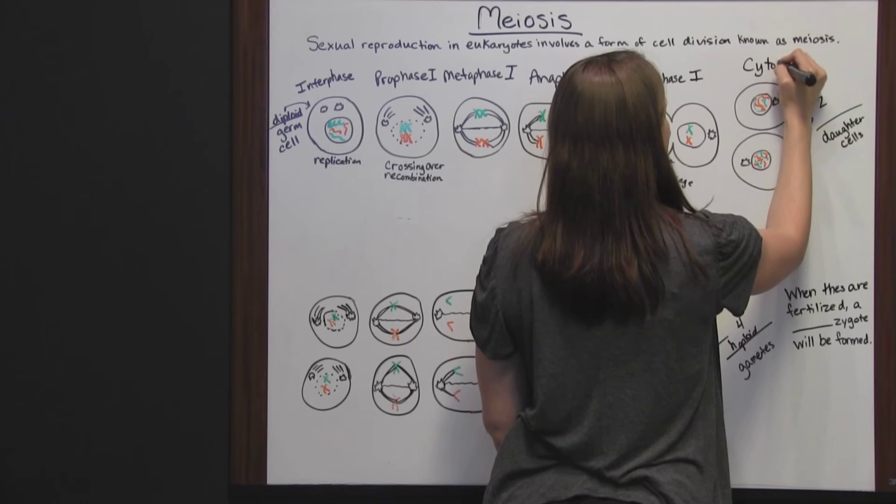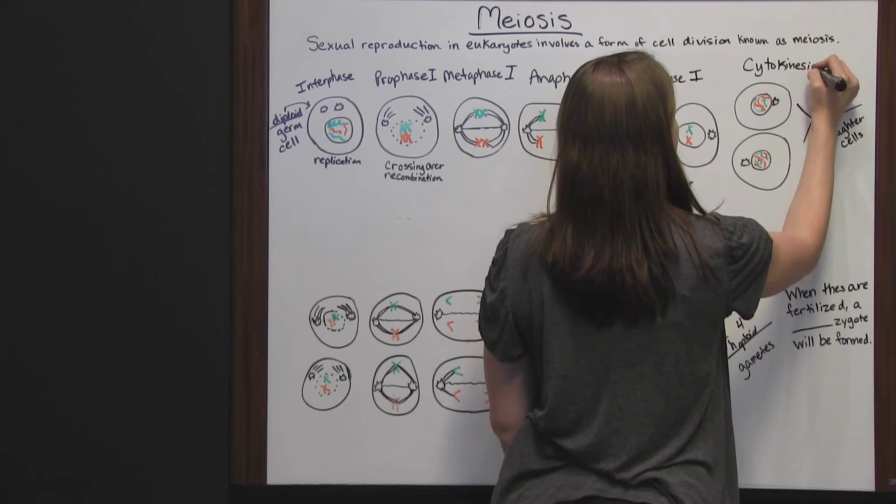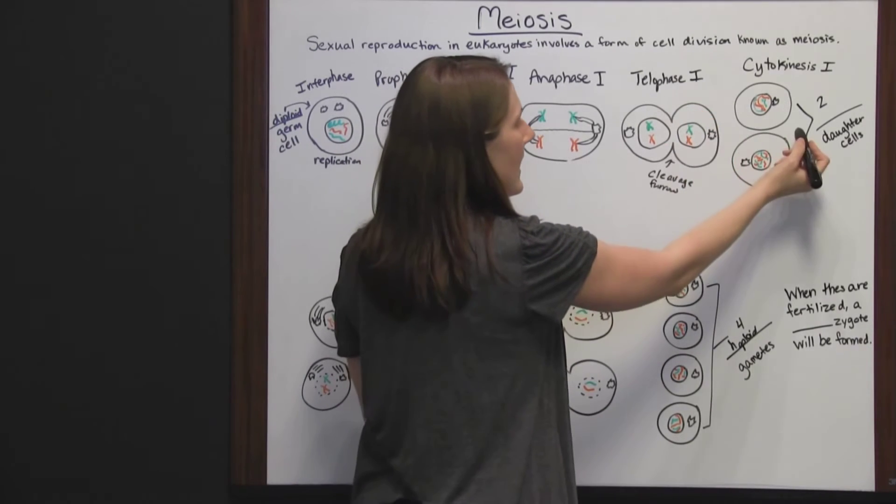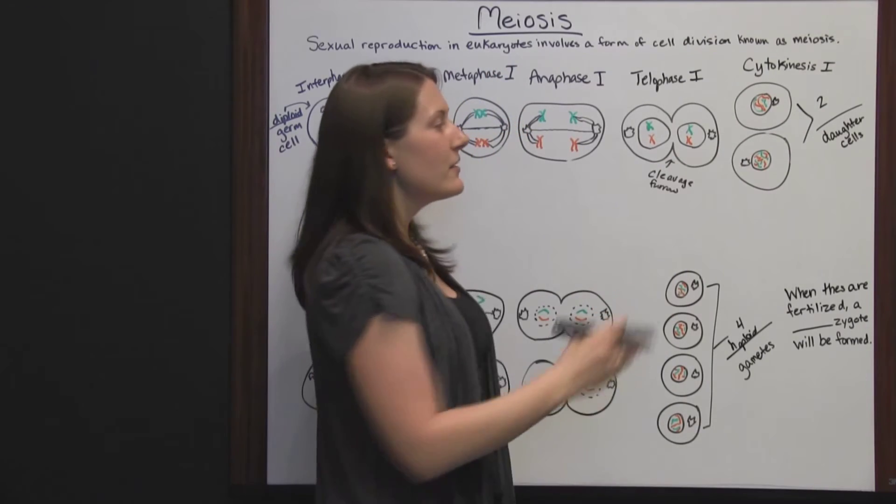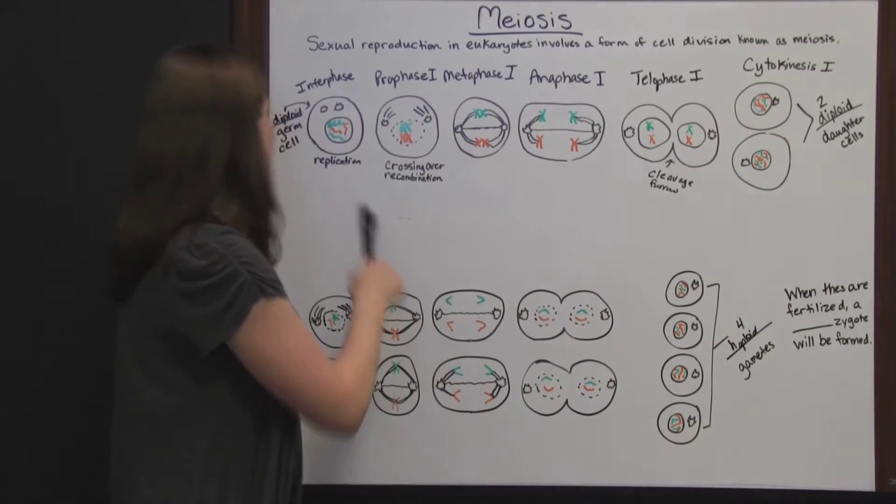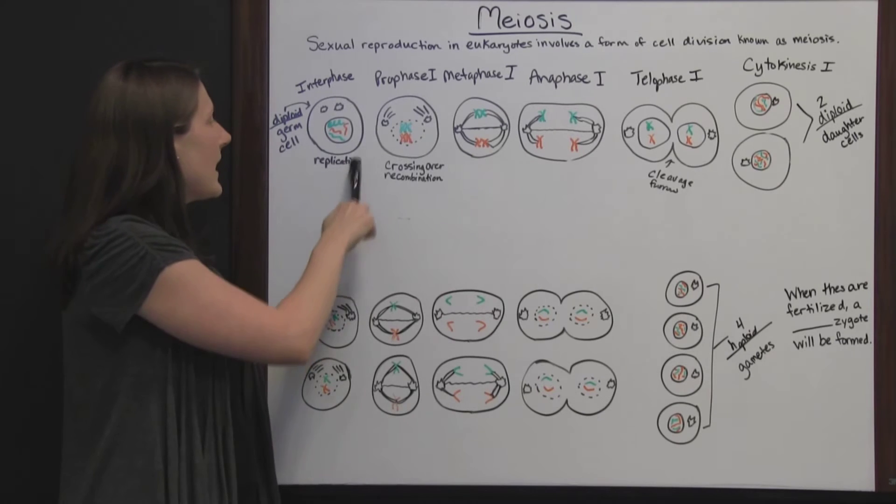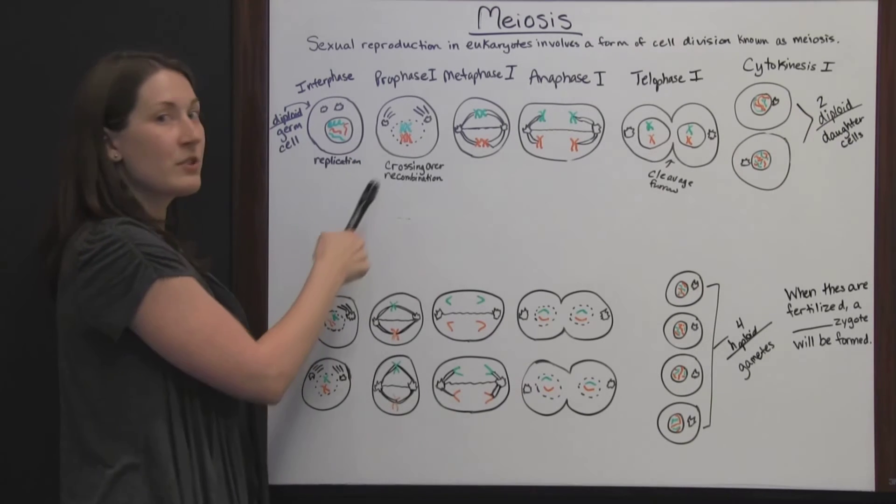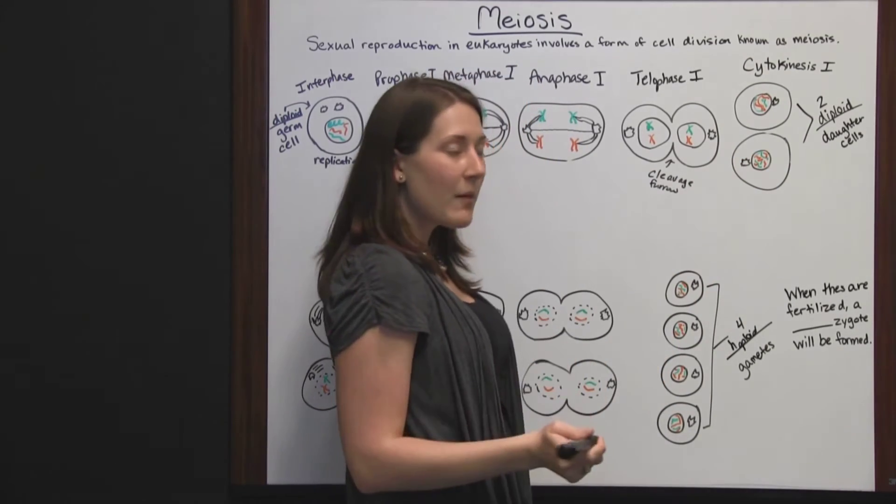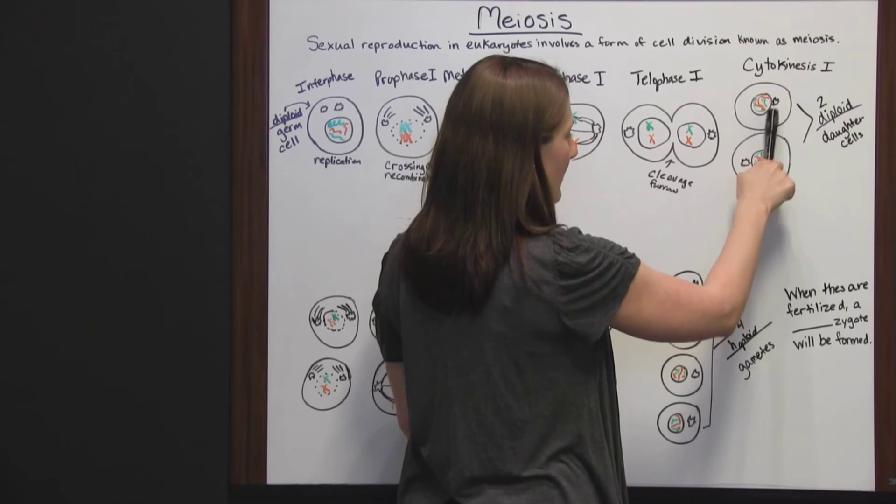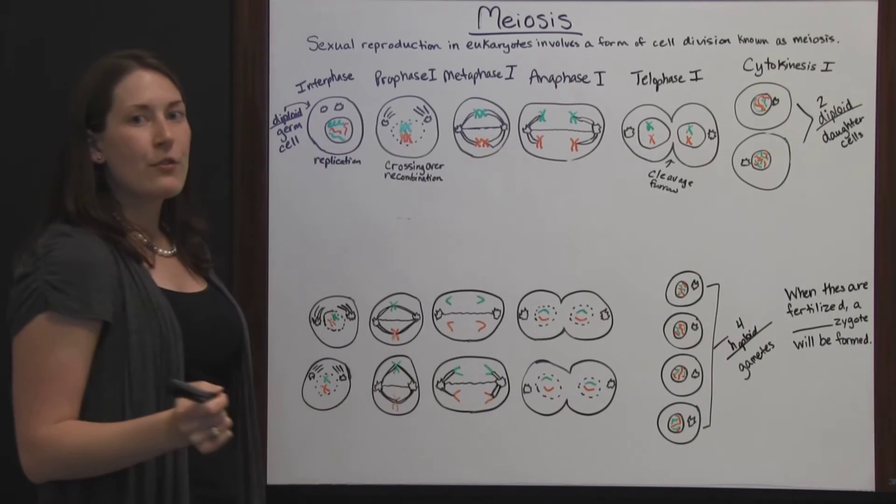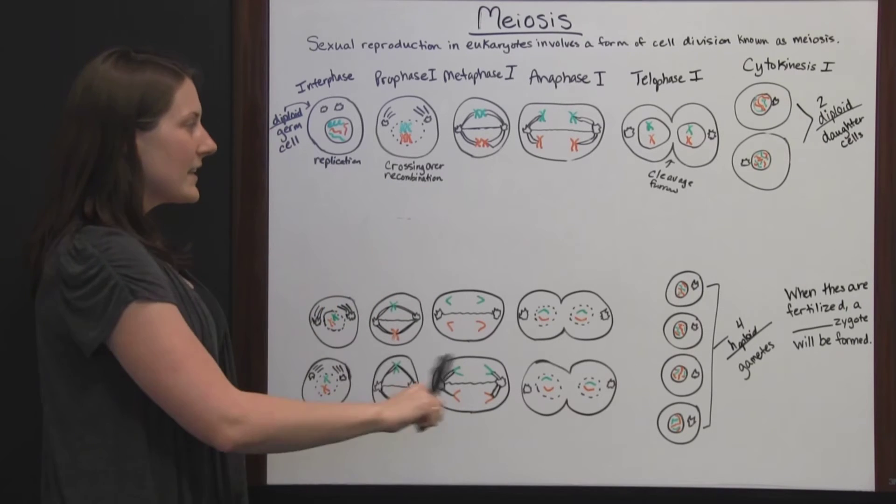Then cytokinesis I occurs, where the cytoplasm splits and a definite division is made between the two cells. Now there are two diploid daughter cells. We started with our diploid germ cell, the genetic material was replicated so there was twice as much, and after this cell division, each daughter cell is diploid. Each has twice as much genetic material as needed to be a haploid gamete, so we go through meiosis II, the second step in this process.